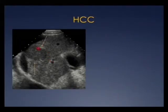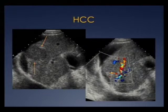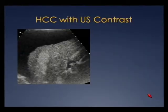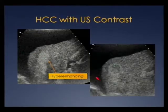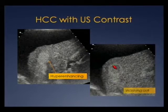Here's a hypoechoic lesion in the right lobe in a patient with ascites and hepatitis, showing increased blood flow — this is HCC until proven otherwise, and I would get MRI for confirmation. Here's another patient done experimentally with ultrasound contrast: in the early phase there was hyper-enhancement like on MRI, and in the delayed phase it washed out with residual capsule enhancement — another HCC.